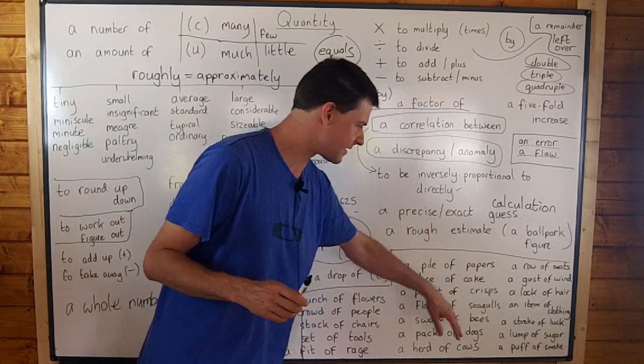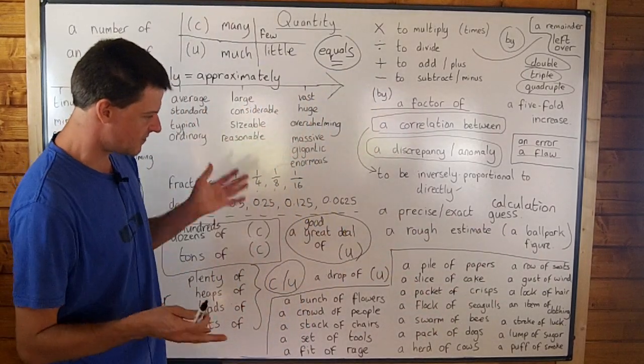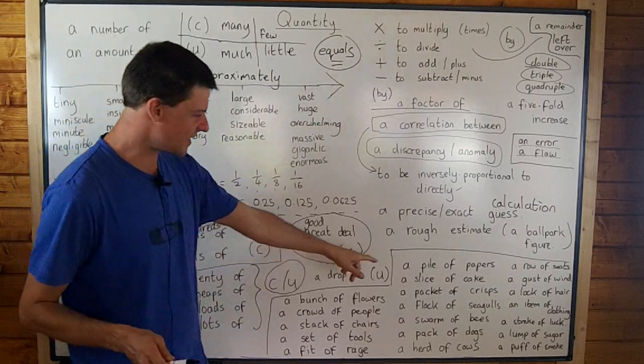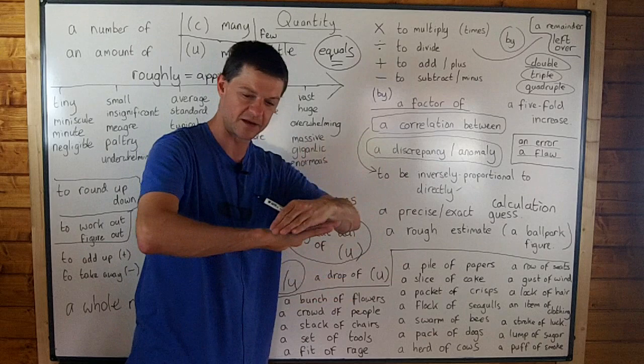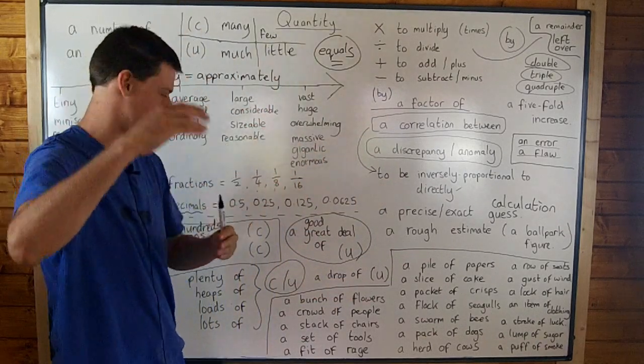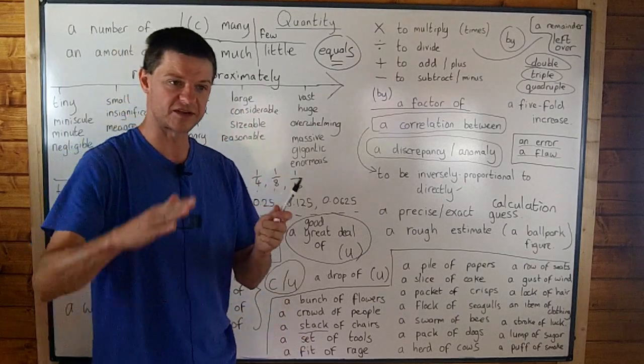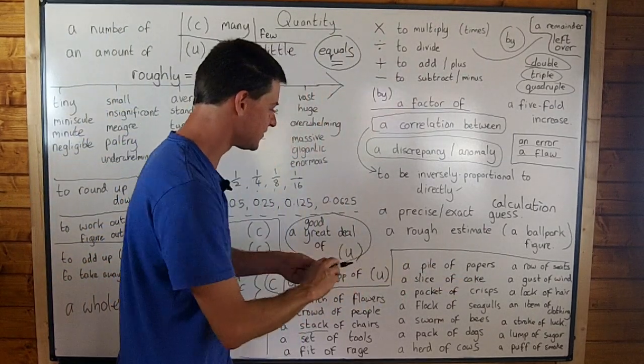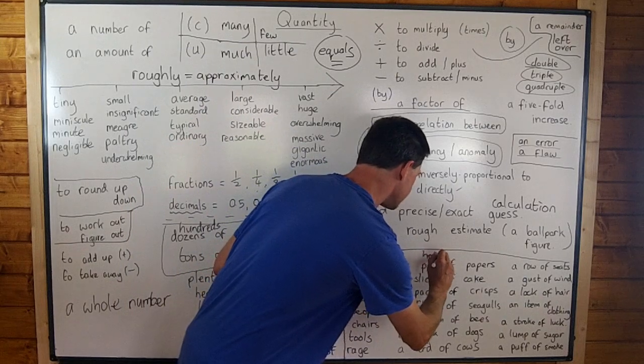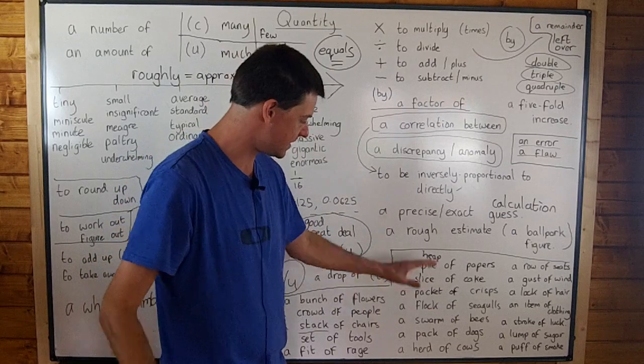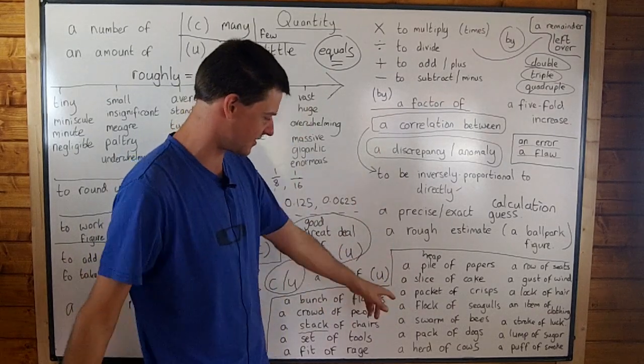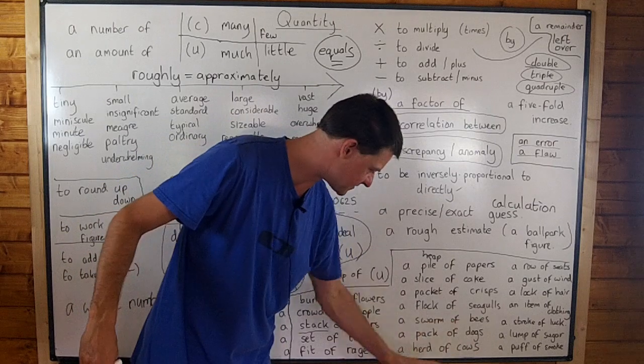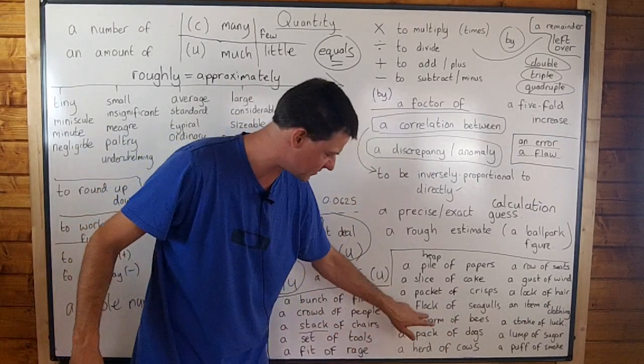Lastly, we've got a lot of nouns here where we quantify a group of, or an amount of, or a number of things. So we can say a pile of papers. And we often use this word pile, meaning when things are stacked on top of each other. And so very similar to stack here, but I would only say stack if they're literally stacked on top of each other, like a stack of chairs, but we can say a pile of papers. You could even say a heap of papers there as well. Nothing wrong with that. A heap of papers, a pile of papers, a slice of cake. I think everyone knows that one, a slice of bread, a slice of cake, a packet of crisps. I'm sure you all know it, a flock of seagulls, a swarm of bees, a pack of dogs, a herd of cows. So we have different collective nouns here for the animals. I think every animal has its own collective noun.